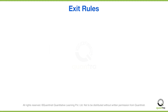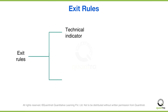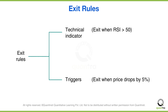The same applies to defining exit rules. It will depend either on a technical indicator — for example, when the RSI goes above 50 you exit your position — or on triggers that you've set, meaning the take profit and stop loss levels. For example, you can exit when the price drops by 5%.